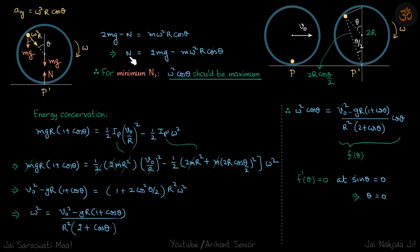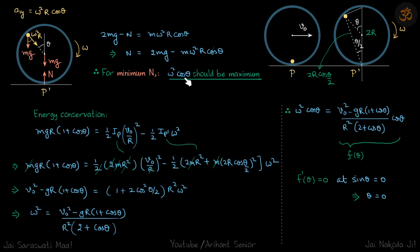Writing the forces in the y-direction: 2mg − N = mω²r·cosθ, which gives N = 2mg − mω²r·cosθ. Since mg is constant, the normal reaction as a function of theta has two variables: omega and theta. For N to be minimum, ω²·cosθ must be maximum. This is the dilemma — as the particle goes up, omega decreases but cosθ increases.